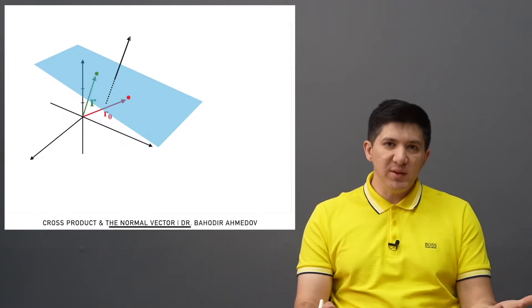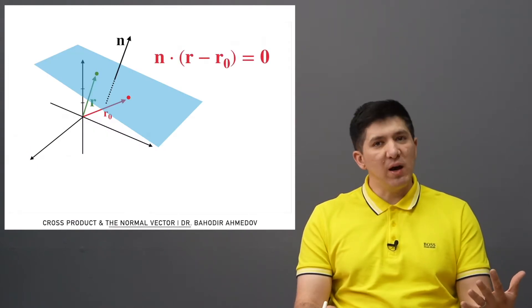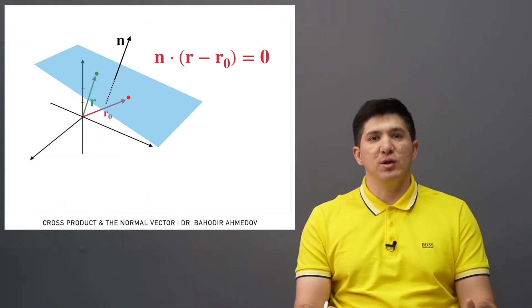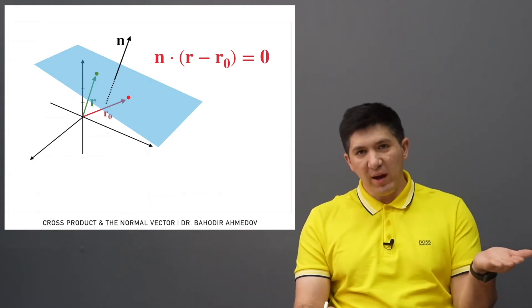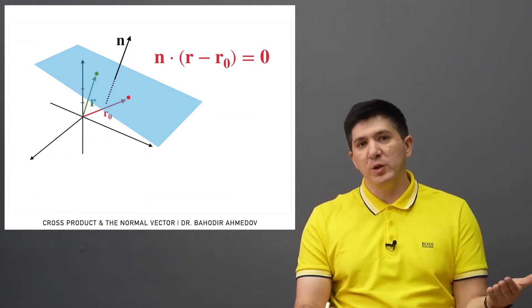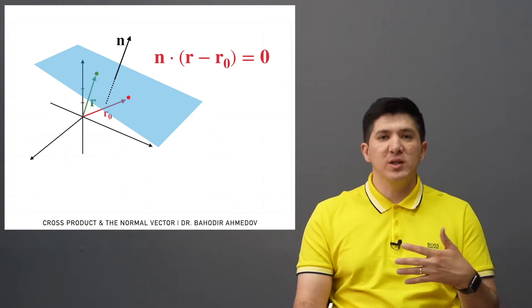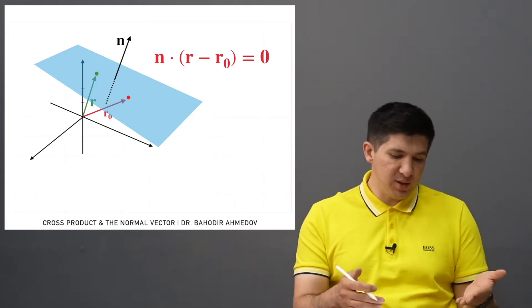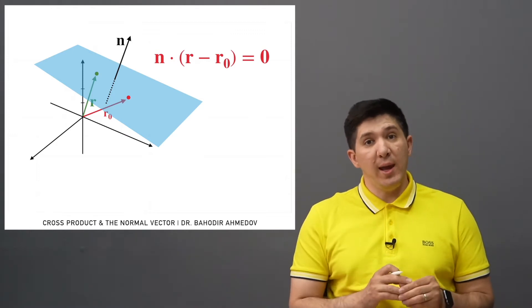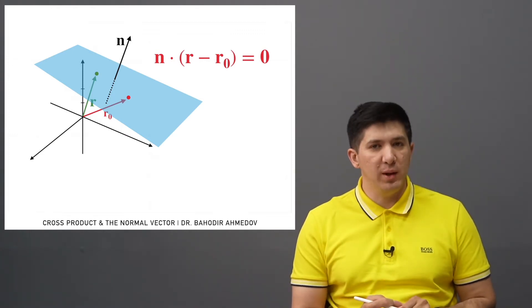If you remember, previously we said that we need two vectors in order to construct an equation of the plane: the normal vector, and any vector which points to this plane. So if you are given r0 and n, you can construct an equation of the plane.